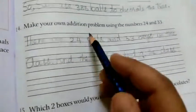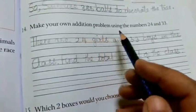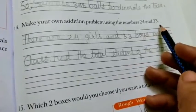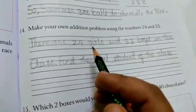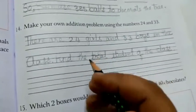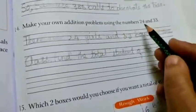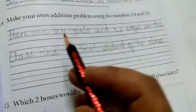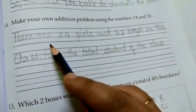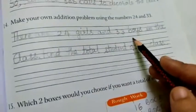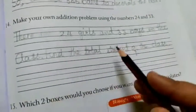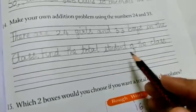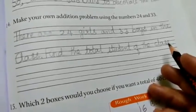Now 14th one. Make your own addition problem using the numbers 24 and 33. So what we have to do here? Make your own addition problem. Now you have to make the questions. So here, there are 24 girls and 33 boys in the class. Find the total students of the class. I have made it like this. You can make any other also.